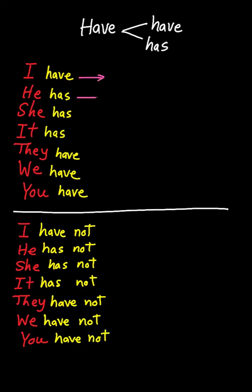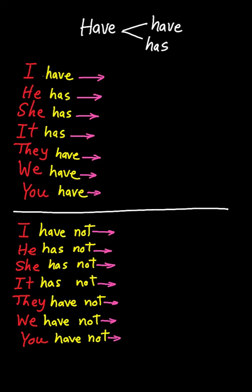But we don't usually write or say the full forms like this. Sometimes we use short forms instead. For example, instead of writing 'I have' as the full form, we remove the 'h' and 'a' and put an apostrophe instead.